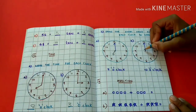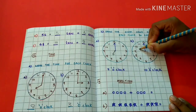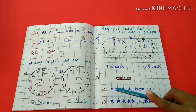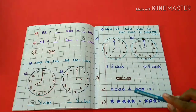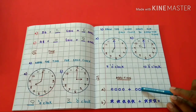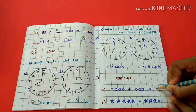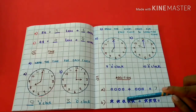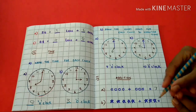10 o'clock. Addition: 1, 2, 3, 4 plus 1, 2, 3 equals 7. 1, 2, 3, 4, 5, 6, 7, 8.